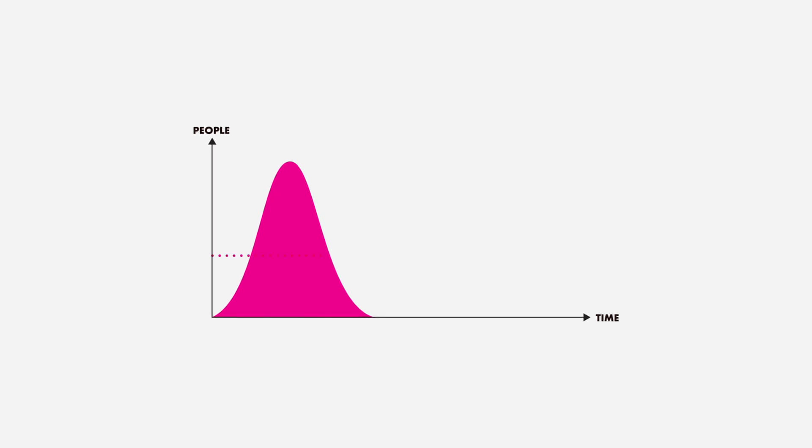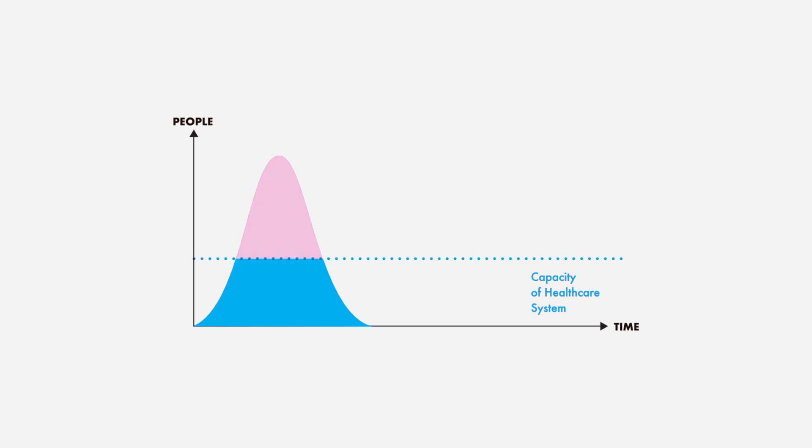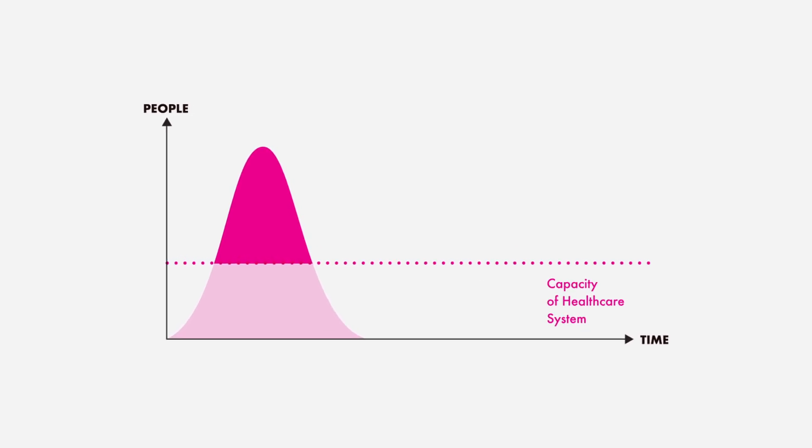Now pay attention. This dotted line here is probably the most important part of this story, because it shows the limit of how many sick people fit in a hospital. Under this line, people can be treated normally when arriving to a hospital. But above this line, there won't be room in hospitals anymore. And that's the real problem.